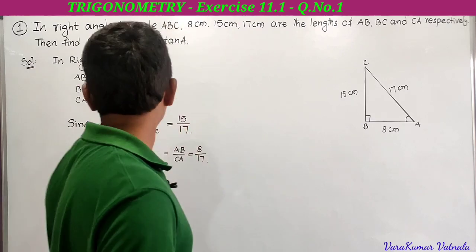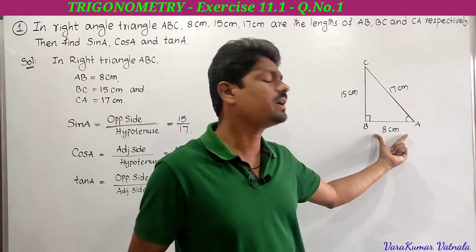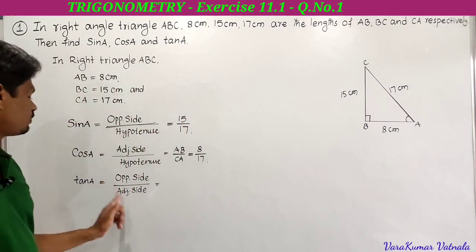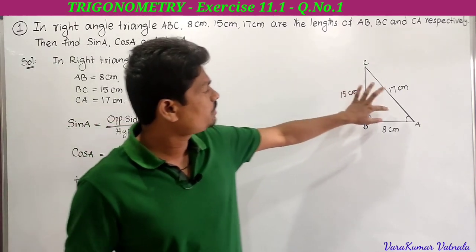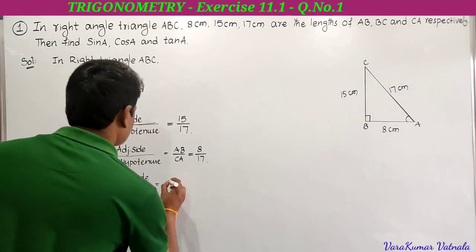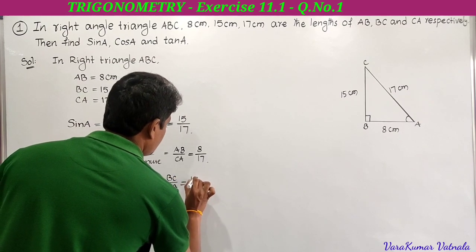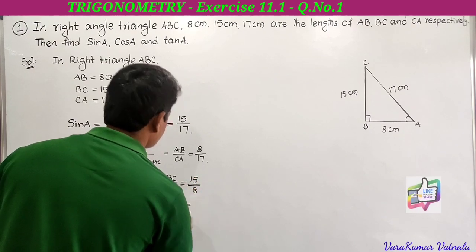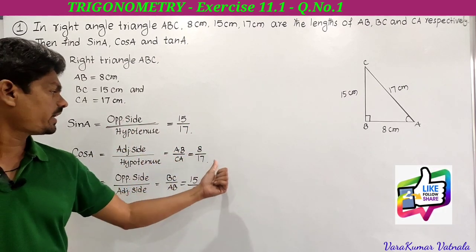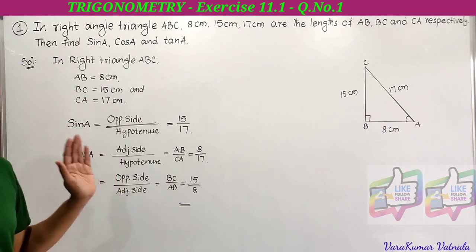For tan A, BC becomes the opposite side and AB becomes the adjacent side. That is very important. Suppose if he asks sin C, then AB becomes opposite side and BC becomes adjacent side — so the angle is very important. Tan A equals BC by AB, which is 15 by 8. So sin A equals 15 by 17, cos A equals 8 by 17, tan A equals 15 by 8.